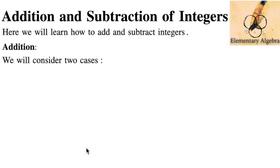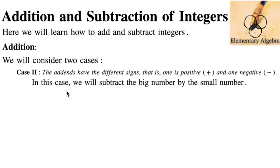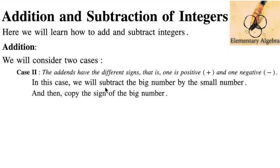Now it's time to consider Case 2 for addition. In Case 2, the addends have different signs — that is, one is positive and the other is negative. In this case, we will subtract the big number by the small number, then copy the sign of the big number. As a technical note, when I say big and small, I mean the absolute values — I'm using those words to keep the terminology simple for now.